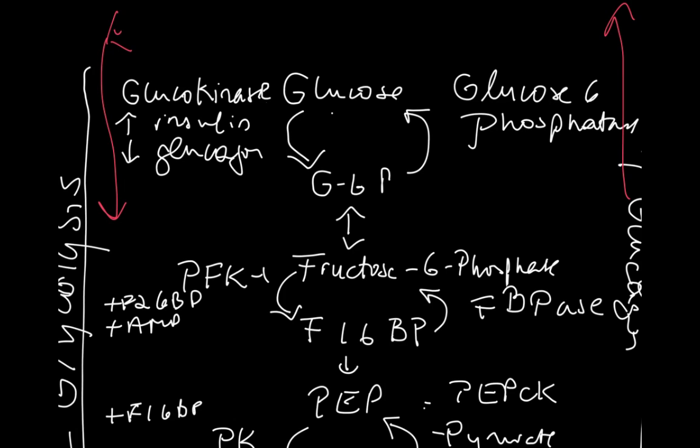In the fed state, glucose is converted to glucose 6-phosphate by the enzyme glucokinase in the liver. Glucokinase is controlled at the transcriptional level by insulin and is inhibited by glucagon during fasting.